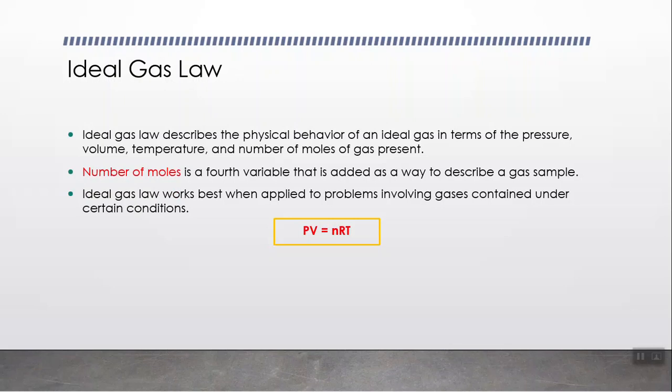This is the ideal gas law, PV equals nRT. It's also known as PIVNERT because of the way it's spelled. P stands for pressure, V stands for volume, N is the number of moles, R is a universal gas constant that is always given to you, and T is temperature.